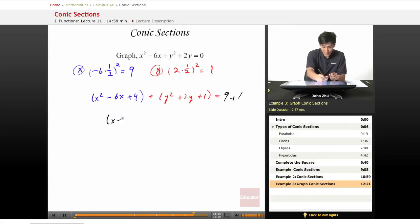So factoring this out, we get x minus 3 squared plus y plus 1 squared equals 10. And we see that this is a circle with center at 3, negative 1, which is determined by these terms right here.